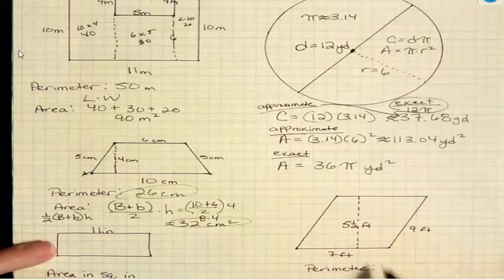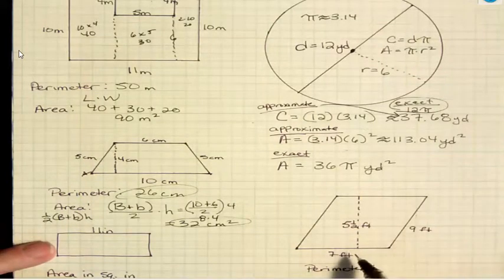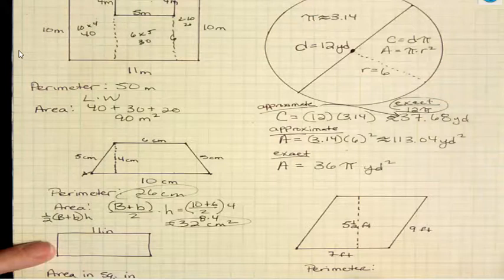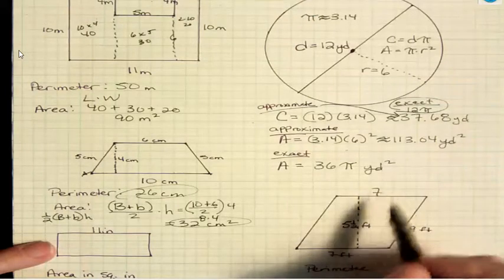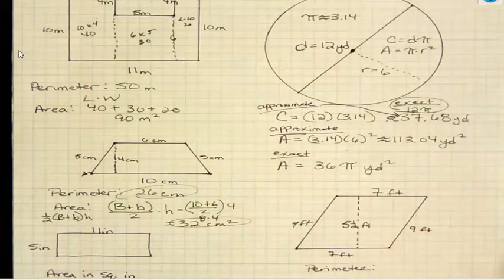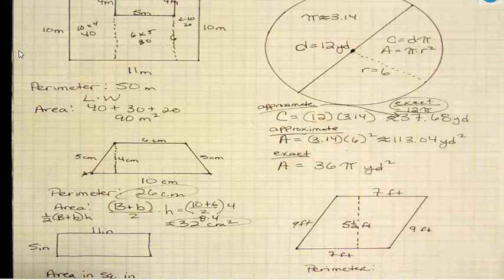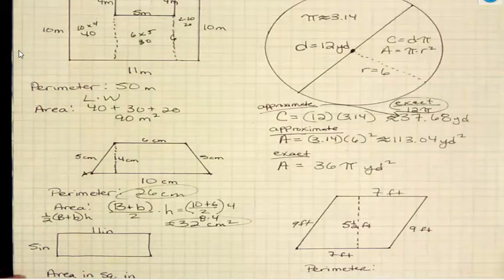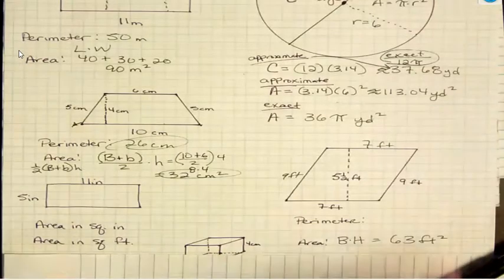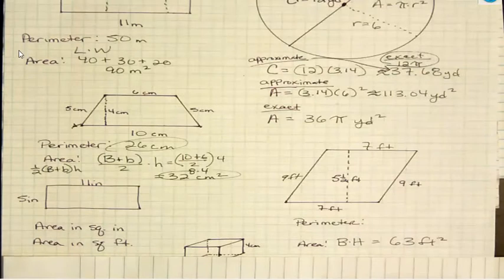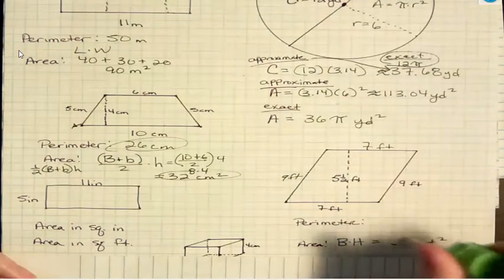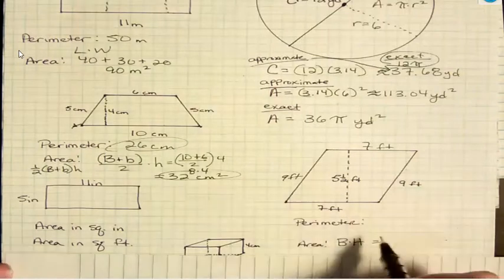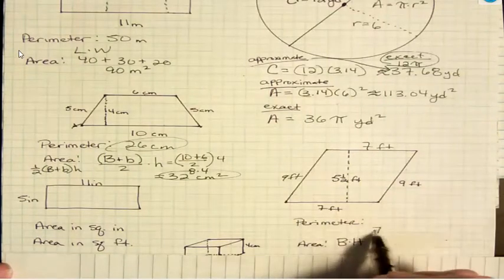For a parallelogram, the area is base times height. So we have nine times seven, which is 63 feet squared. Wait, that was a mistake. When you're doing your math, you need to have time and to think about it and don't rush or you make mistakes. What am I actually multiplying? Seven is the base, but nine is not the height. The height is the dotted line here, which is five and a half. So I need to multiply base times height, which is seven times five and a half.